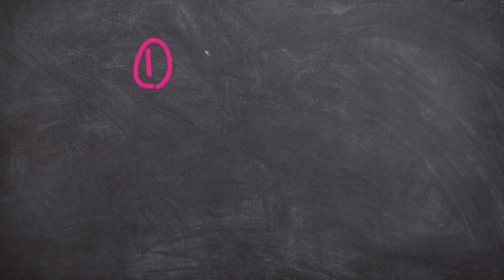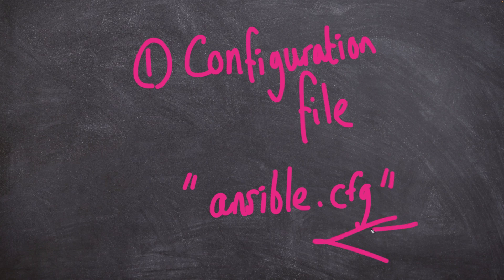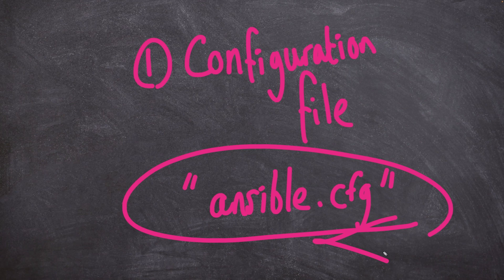The Ansible architecture can be broken down into four core components. The first component is the configuration file. Typically this is called ansible.cfg, and using this file you can specify global system settings. We'll see what this looks like in the next video.